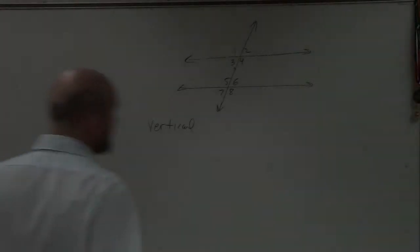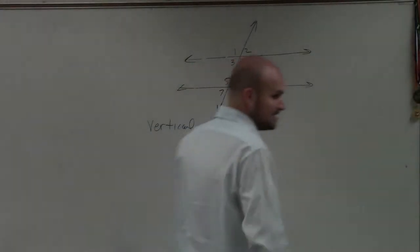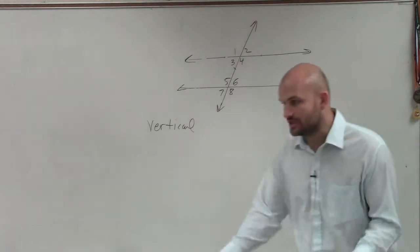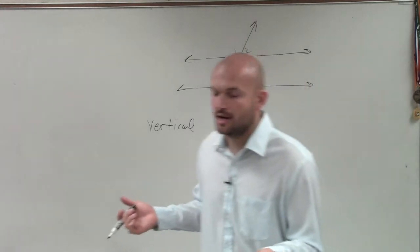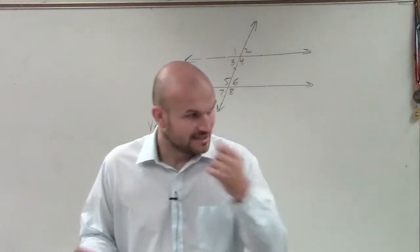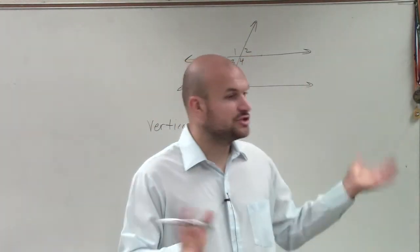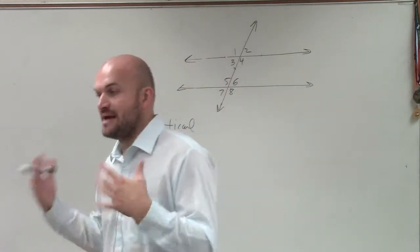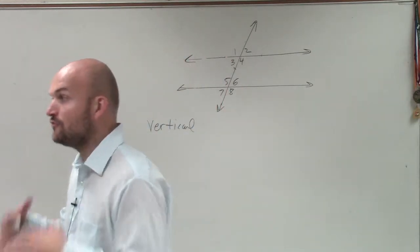Now let's go ahead and determine all the vertical angles. We talked about the definition of linear pair — two adjacent angles that make a straight line.